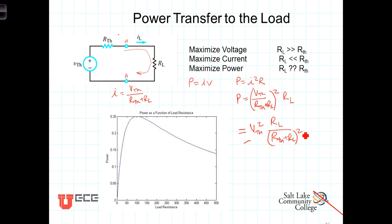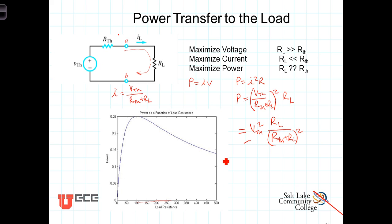Let's look at this function as a graph, where R_L is along the horizontal axis and we're plotting power as a function of R_L. As we can see from the expression, if R_L equals zero, the power will be zero — and that stands to reason. As R_L increases, the power also increases, continuing up to a certain value of R_L. Beyond that value, the power then starts to drop off. This begs the question: what value of R_L will give us this optimal power transfer to the load?